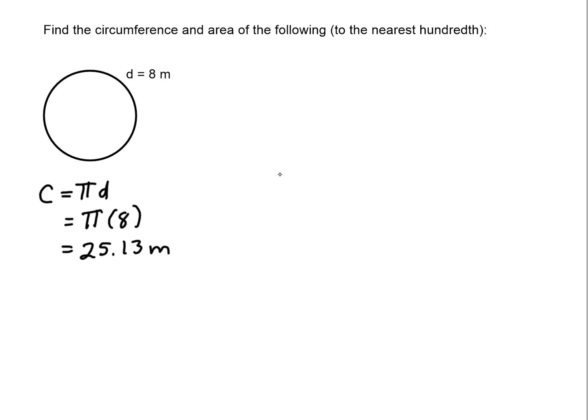Then area. Area of the circle is pi times r squared. Again, we'll keep the pi. In this case, radius is the diameter divided by 2. So that'll be 8 divided by 2, which is 4.